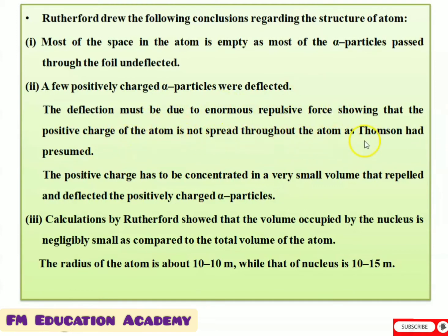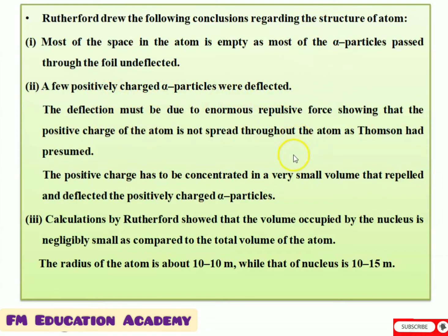This showed that the positive charge of the atom is not spread throughout the atom, as Thomson had presumed. Thomson had assumed the whole atom consists of positive ions spread uniformly, but according to Rutherford, that is not the case. Because the positively charged alpha particles were deflecting due to repulsive force, the positive charge had to be concentrated in a very small volume that repelled and deflected the positively charged alpha particles.